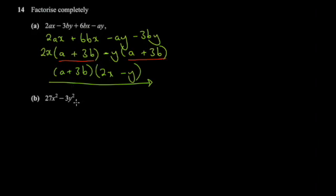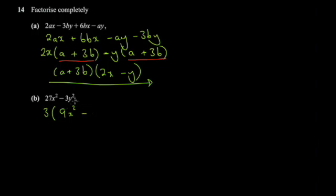This next one uses more or less what we did previously — the concepts are very similar. We have 27 and 3, so we need to find the highest common factor for the numbers, which is 3. For the variables, there's no common factor, so 3 into the first term gives you 9x squared, and 3 into the second gives you negative y squared.